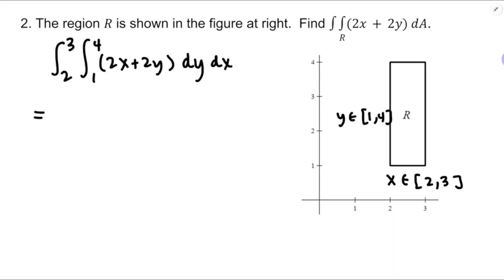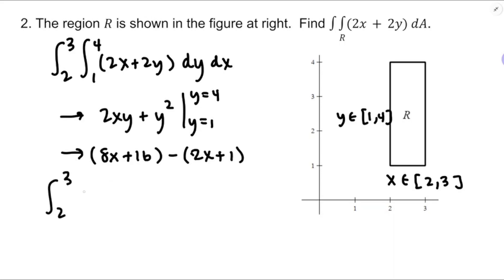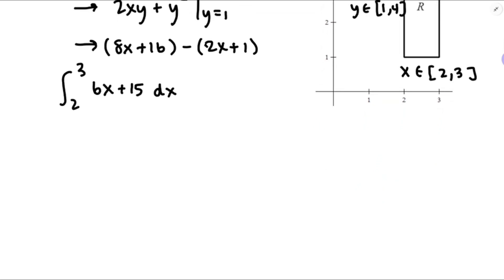Anti-differentiate with respect to y: that would be 2xy plus y², as y runs from 1 up to 4. When y equals 4 that's 8x plus 16, then subtract when y equals 1 that would be 2x plus 1. So I'll be integrating from 2 to 3: 8x minus 2x is 6x, and 16 minus 1 is 15. This is the type of integral we probably could solve with geometry, but I'm just going to anti-differentiate.